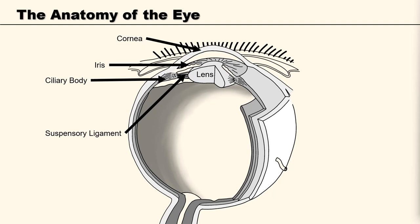Briefly mentioned is the sclera, and this is what we associate as being the white part of the eye. It is opaque, fibrous, and a protective outer layer of the eye, containing mainly collagen and some crucial elastic fibre. Muscles of the eye attach to the sclera for independent eye movement, meaning we don't have to move our head in order to alter our visual field.